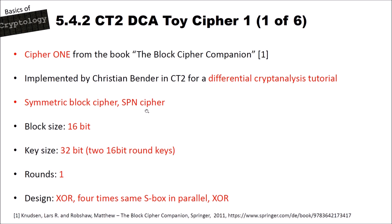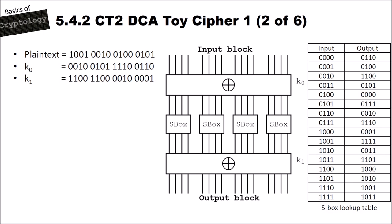This cipher has only one round. Its design consists of XOR, four times the same S-box in parallel, and then an XOR again. Since there is no permutation, this is actually an S-N cipher rather than a full SPN cipher.